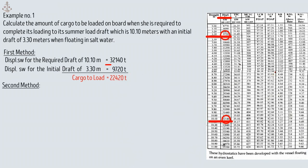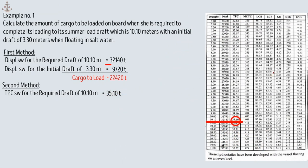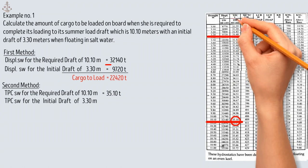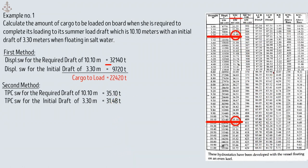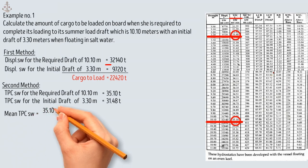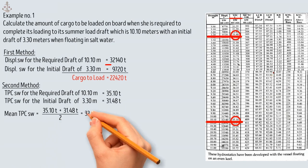The second method to determine the cargo to be loaded for the required draft of 10.10 meters when the ship is floating in salt water: extract the TPC in salt water for the required draft of 10.10 meters, which is 35.10 tons. Then extract the TPC for the initial draft of 3.30 meters, which is 31.48 tons. Next, determine the mean TPC by adding both TPC values and dividing by 2: mean TPC is (35.10 + 31.48) / 2 = 33.29 tons.